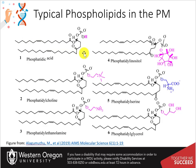Phospholipids have head groups connected to the backbone through a phosphodiester bond. Phosphatidyl ethanolamine, phosphatidyl inositol, phosphatidyl choline, and phosphatidyl serine are dominant phospholipids in the cell membrane. Notice that the polar head groups have quite a variety and introduce unique structures and charges into the region of the plasma membrane in which they are found.